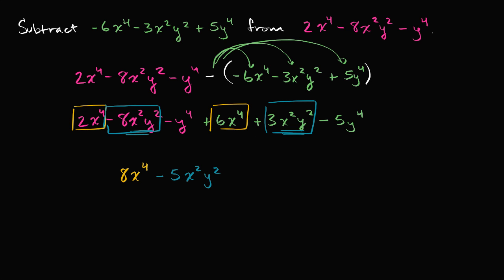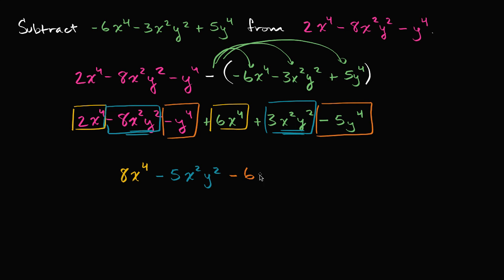And last but not least, we're subtracting 1y to the fourth, and then subtracting 5 more y to the fourths. We can view this as negative 1y to the fourth minus 5y to the fourth. Negative 1 minus 5 is negative 6, so that's negative 6y to the fourth. And we're done — we have subtracted this polynomial from that one.